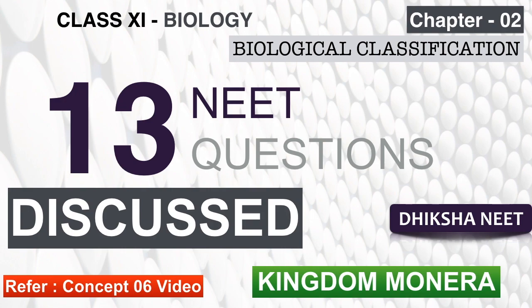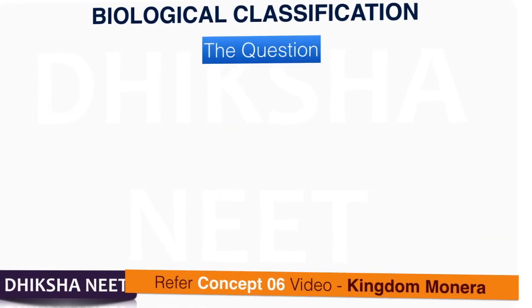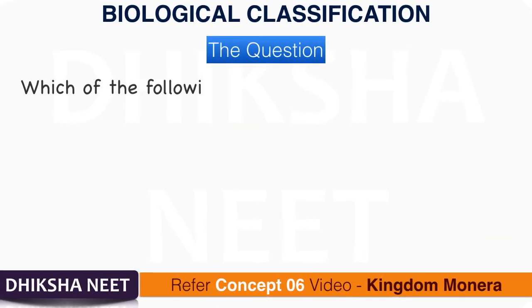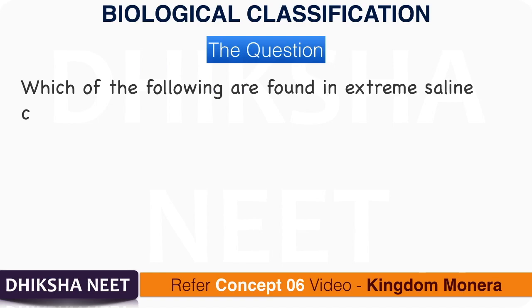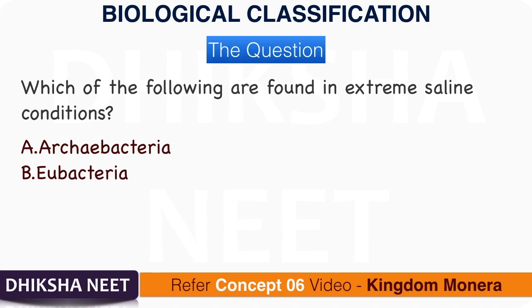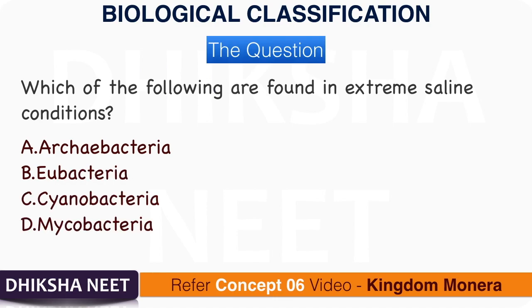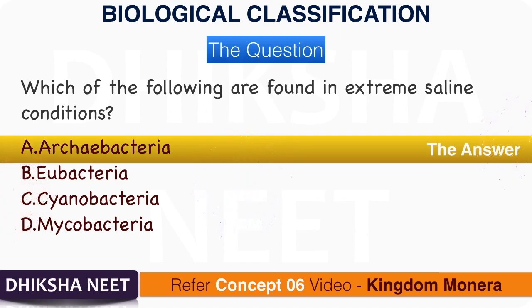Now, let's get into the questions. Question 1: Which of the following are found in extreme saline conditions? A. Archaeobacteria. B. Eubacteria. C. Cyanobacteria. D. Mycobacteria. The answer is option A, Archaeobacteria.